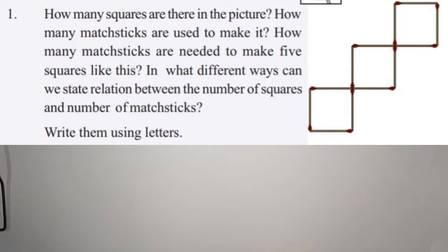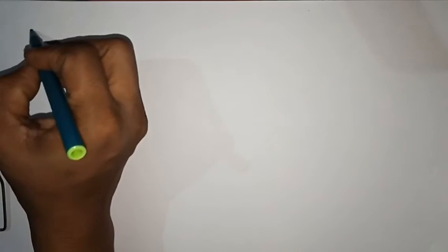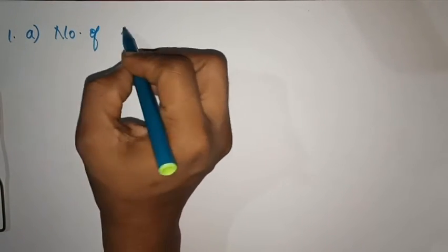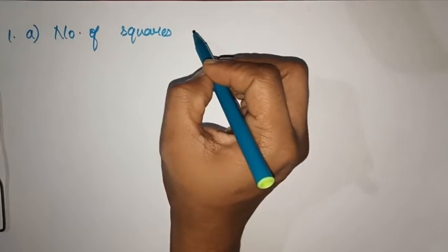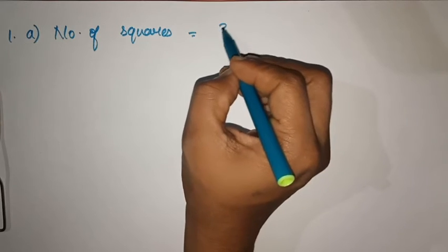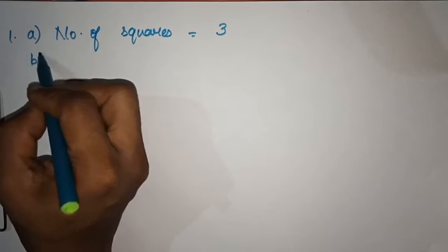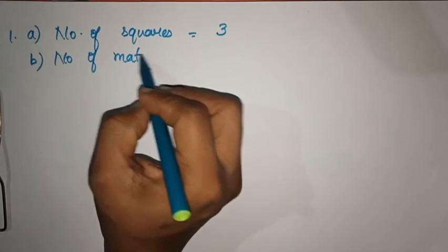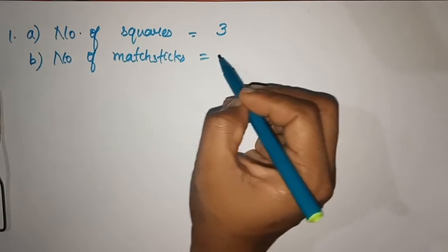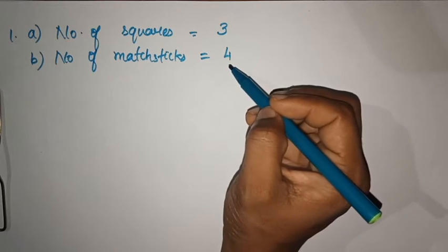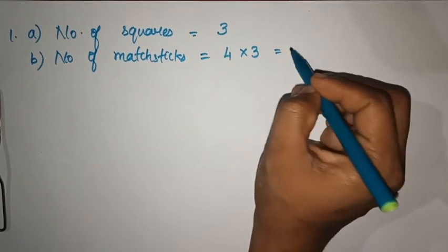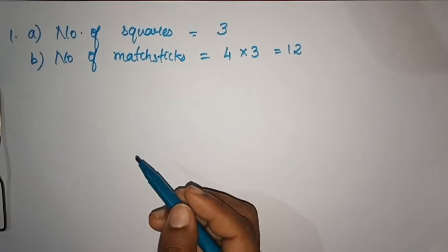What is this? You will find the number of squares. How many squares are the same? It is number 4 — number of paths is 4. How much is 4 in a square? So it requires 3 squares, and 3 squares and 4 gives 12 matchsticks. So the number of matchsticks for 3 squares is 12.